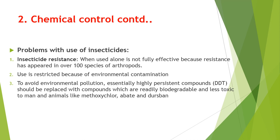Although chemical control is the most commonly used method to control vectors, insecticide resistance is the major problem. The use of insecticides is also restricted because of environmental contamination, which can be avoided by replacing highly persistent compounds with readily biodegradable and less toxic products. For example, DDT can be replaced by methoxychlor or abate.